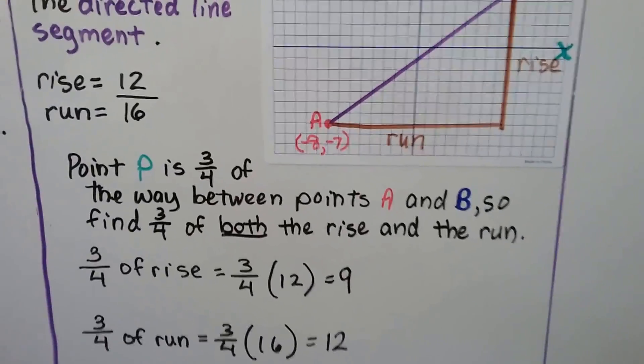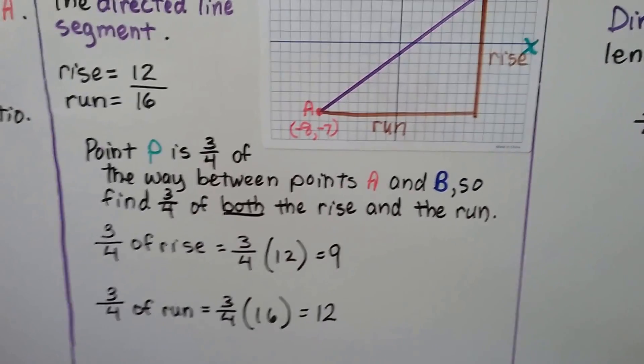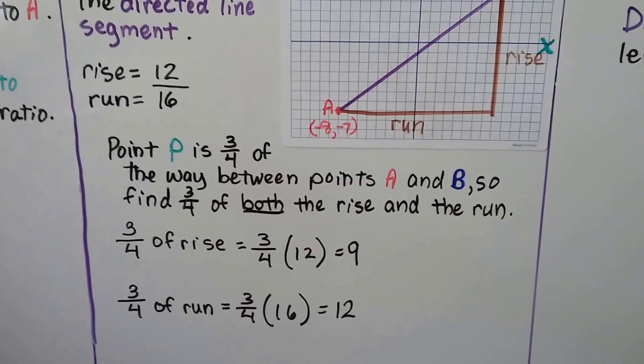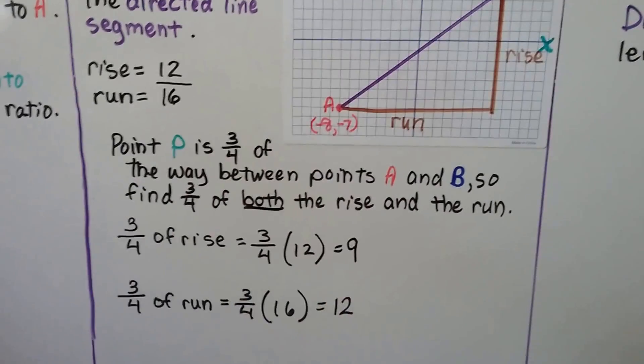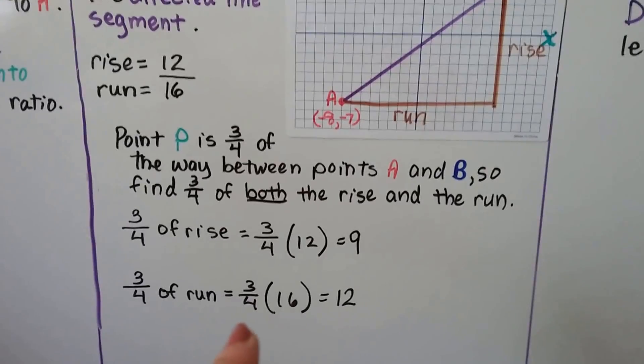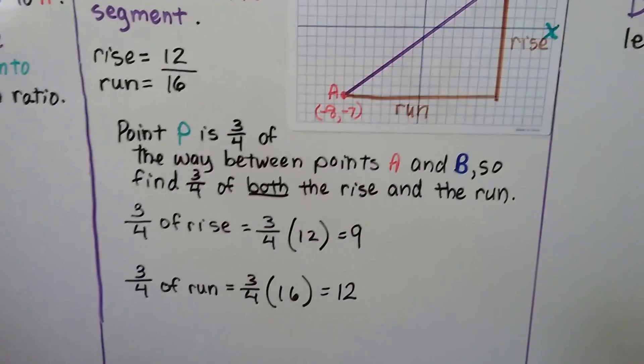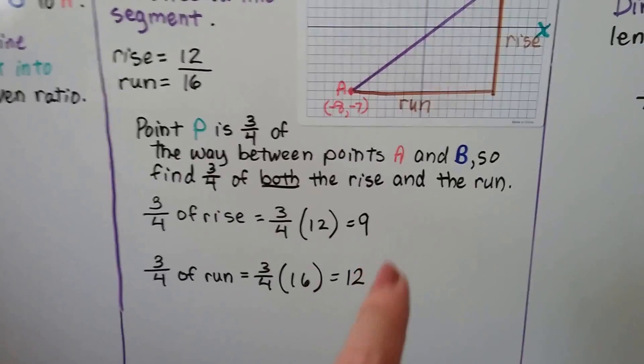And point P is 3 fourths the way between points A and B. So we'll find 3 fourths of both the rise and the run. 3 fourths of the rise is 3 fourths times 12, which is 9, and 3 fourths of the run is 3 fourths times 16, which is 12. So we have a 9 and a 12.